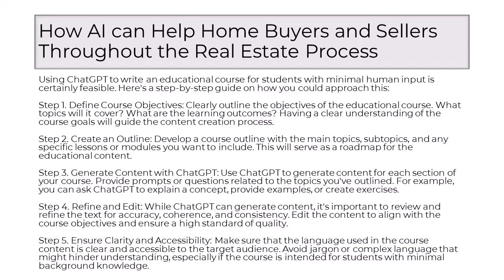Step 2: Create an outline. Develop a course outline with the main topics, subtopics, and any specific lessons or modules you want to include. This will serve as a roadmap for the educational content. Step 3: Generate content with ChatGPT. Use ChatGPT to generate content for each section of your course. Provide prompts or questions related to the topics you've outlined. For example, you can ask ChatGPT to explain a concept, provide examples, or create exercises.